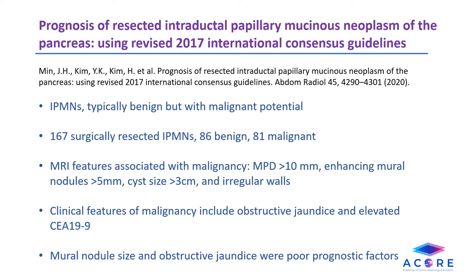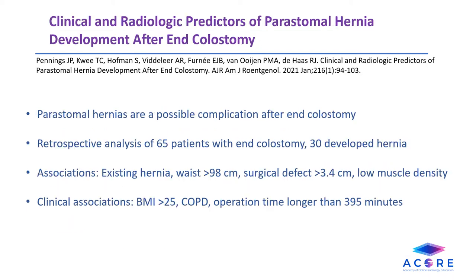Clinical features found to be associated with malignancy included obstructive jaundice and an elevated CA 19-9 level. Patients with mural nodules and obstructive jaundice had a significantly lower survival rate.